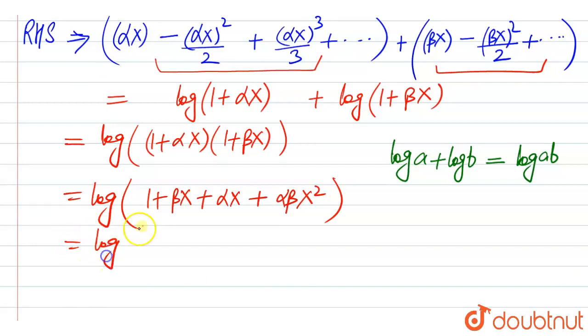So this becomes log 1 plus, taking x common, this is alpha plus beta, and here we have alpha into beta x squared.